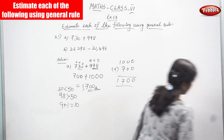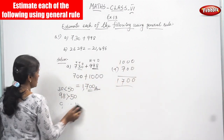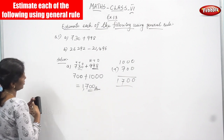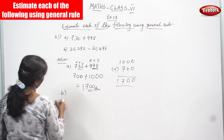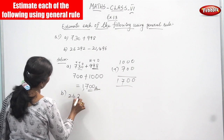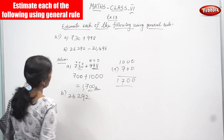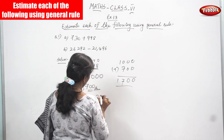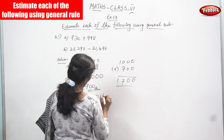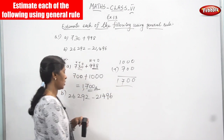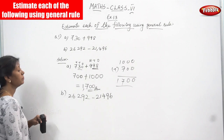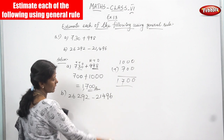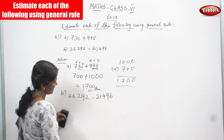Now we are going to see the next question. That is the second question, question B. Look at the B question: 26,292 minus 21,496.